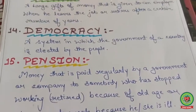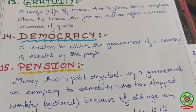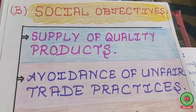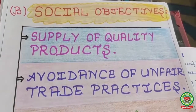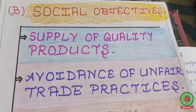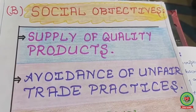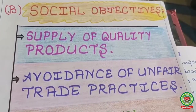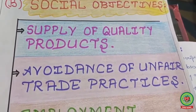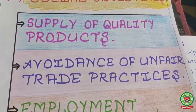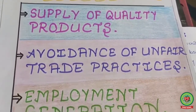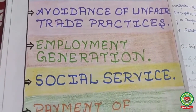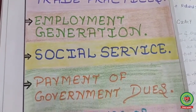Those are all the keyword meanings I'll use in my lecture. The second objective of business is the social objective — the business's responsibility toward society, because business uses the resources of society. Points under social objective include: supply of quality products, avoidance of unfair trade practices, employment generation, social service, payment of government dues, and avoidance of pollution.